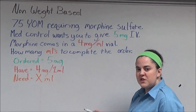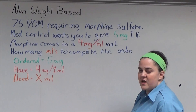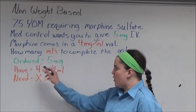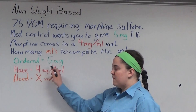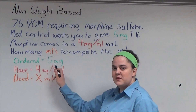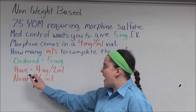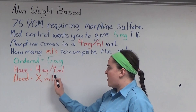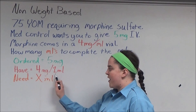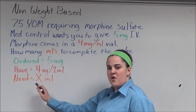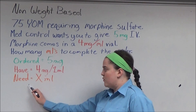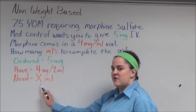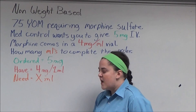The first thing I always do when I come across an equation like this is I write down what's ordered — 5 milligrams — what I have on hand — a 4 milligram per ml vial — and what I need, which is an unknown number of milliliters represented by x.